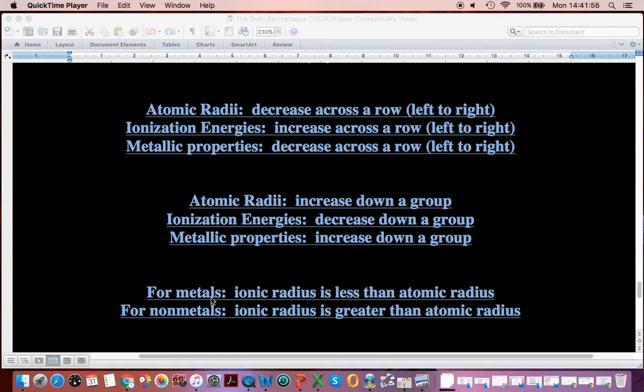For metals, they form ions by losing electrons, and therefore their ionic radius is going to be less than their atomic radius. And for non-metals, well, we know they gain electrons to form an ion, and therefore their ionic radius will be larger than their atomic radius.